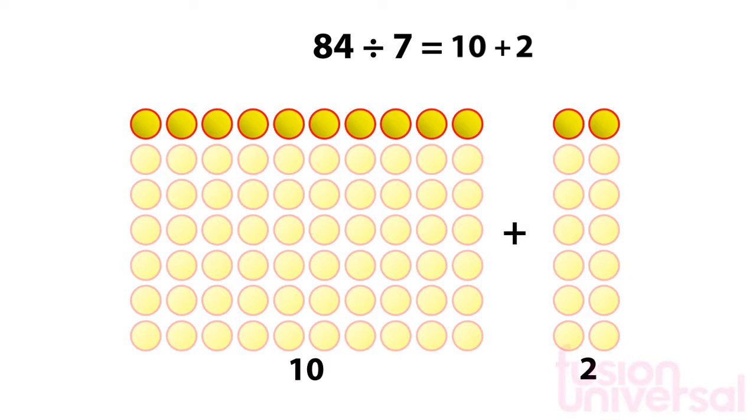This means that there are 10 plus 2 in each of the 7 rows. There are 12 circles in each row. This means that 84 divided by 7 equals 12.